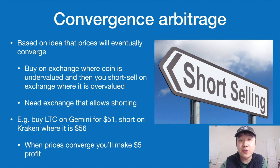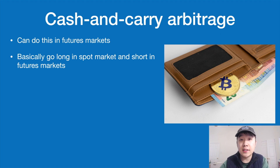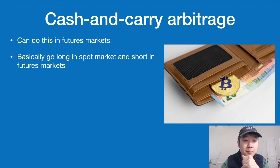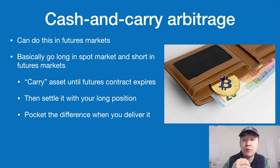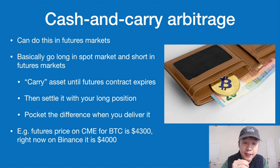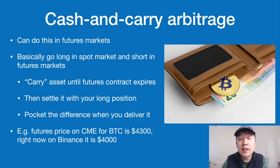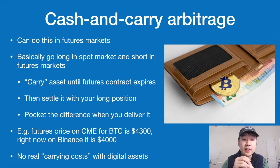Cash and carry arbitrage utilizes the futures markets. You go long in the spot market and short in the futures market, then carry the asset until the futures contract expires and settle it with your long position, pocketing the difference. For example, if Bitcoin futures on CME or CBOE are $4,300 but Bitcoin is $4,000 on Binance, you buy on Binance and short on CME. When the futures contract expires, you deliver the Bitcoin and get paid $4,300. With digital assets there are no real carrying costs — you just hold it in your wallet and deliver when the contract is up.